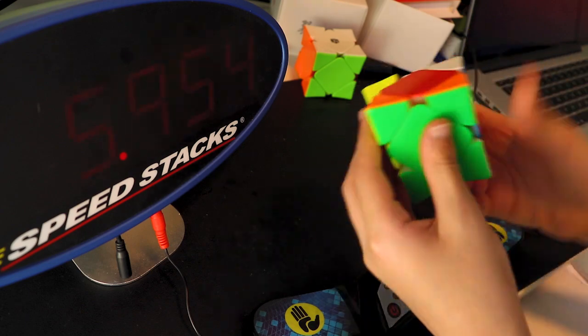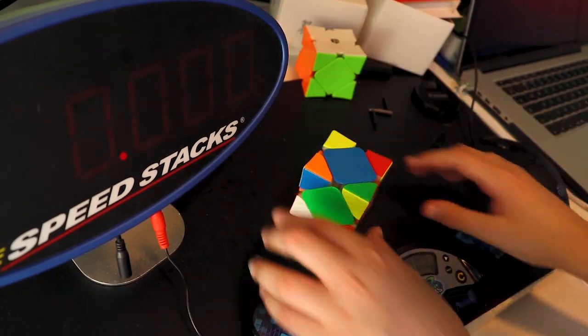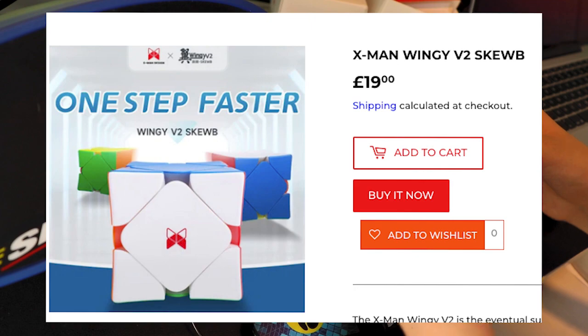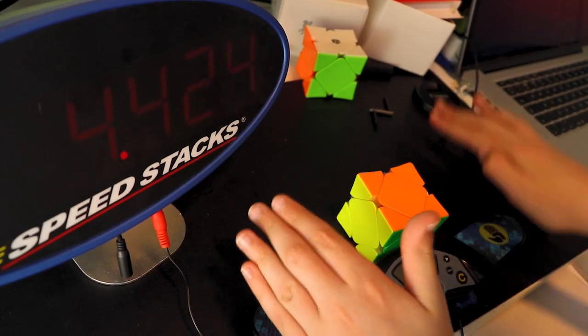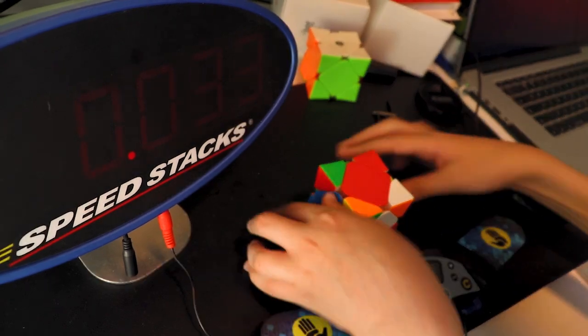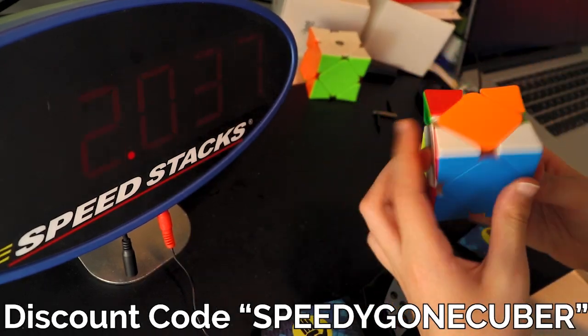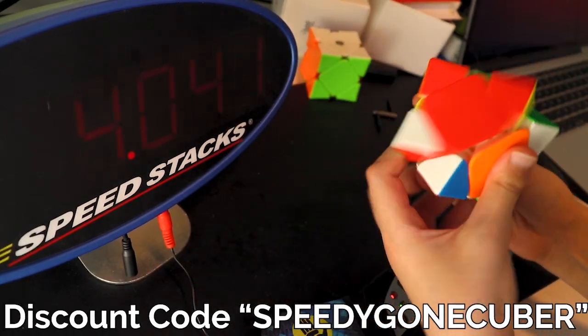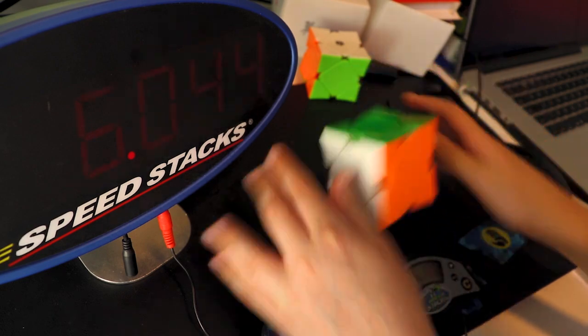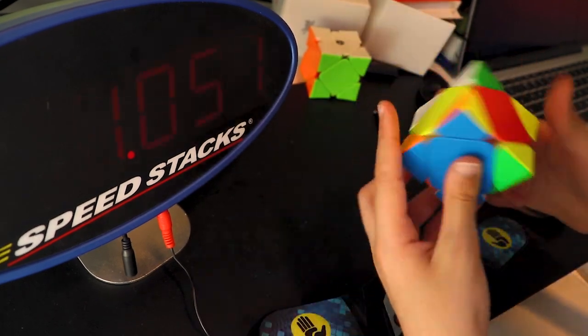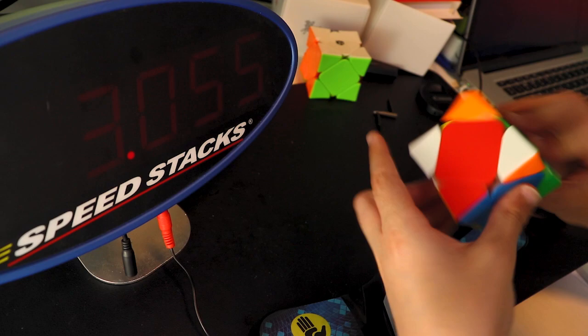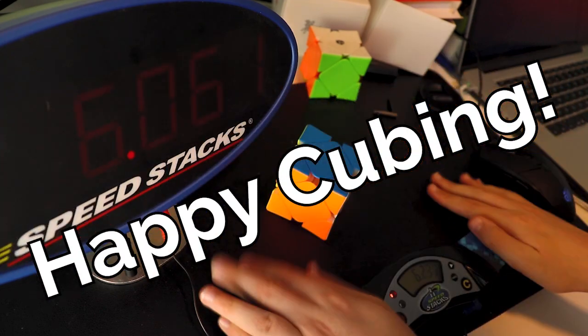If you've tried the wingy or the GAN Skewb, feel free to let us know in the comments. This cube cost £19 on speedcubing.org. Thank you so much to speedcubing.org for sending this cube for me for free to review. Remember you can use the discount code SPEEDYGONCUBER to get 5% off your order. Subscribe for weekly cubing videos and thank you all so much for watching and I'll see you all in the next one. Happy cubing and have an amazing day!